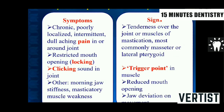The symptoms of MPDS are chronic, poorly localized, intermittent, dull aching pain; restricted mouth opening; and clicking sound. The patient may also complain of morning jaw stiffness and weakness of the masticatory muscles. Signs include tenderness over the joint or muscles of mastication — most commonly the masseter or medial pterygoid. Characteristically, there is presence of trigger points in muscles, reduced mouth opening, and jaw deviation or movement.